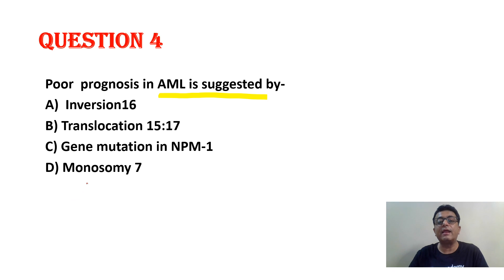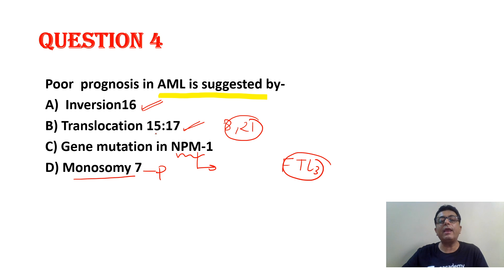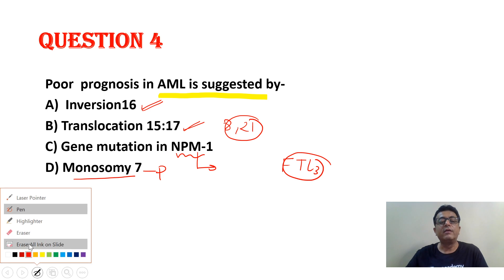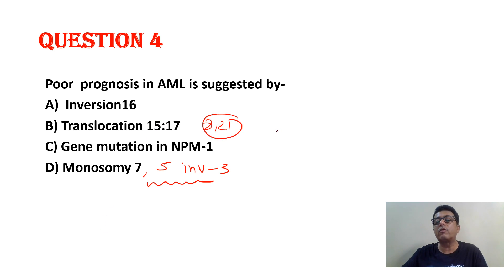Poor prognostic factors in AML: inversion 16 is a good prognostic factor. Translocation 15;17 and translocation 8;21 are good prognostic factors. Gene mutation NPM1 is a good prognostic factor. FLT3 is a poor prognostic factor. Monosomy 7 and monosomy 5 are poor prognostic factors. Philadelphia chromosome (9;22) is a poor prognostic factor. Translocation 15;17 and 8;21 are good prognostic factors.